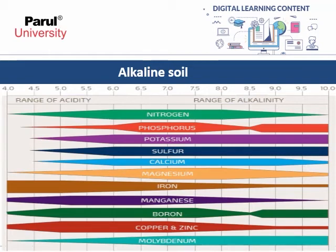We should keep soil pH neutral, meaning 6.0 to 7.5, so that the majority of major nutrients are available to the plant and we achieve higher crop production.